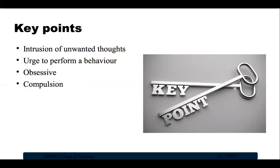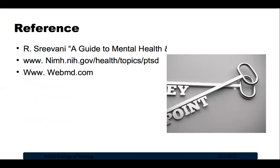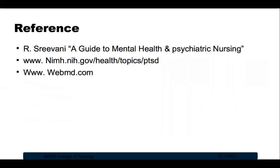Key points: OCD involves intrusive unwanted thoughts called obsessions that lead to repeated behaviors or urges called compulsions. Symptoms include obsessions, compulsions, or a combination of both. Diagnosis is done using ICD-10 criteria and the Yale-Brown Obsessive Compulsive Scale. Treatment typically includes antidepressants and cognitive behavioral therapy, which is found very effective. References include R. Srivani's 'A Guide to Mental Health and Psychiatric Nursing,' and websites of NIMHANS and WebMD.